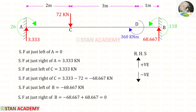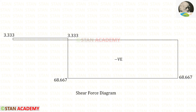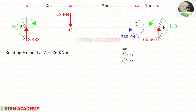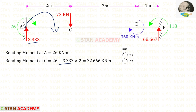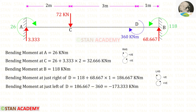Now let us find the shear force values. Using the right-hand side rule we can find the shear force values. Here you can see the shear force diagram. Now let us find the bending moment values. First at point A — MA is acting in the clockwise direction, so it will be positive. Using the left-hand side rule: clockwise will be negative and anti-clockwise will be positive.